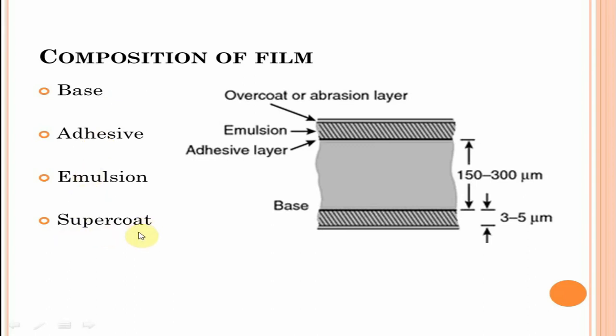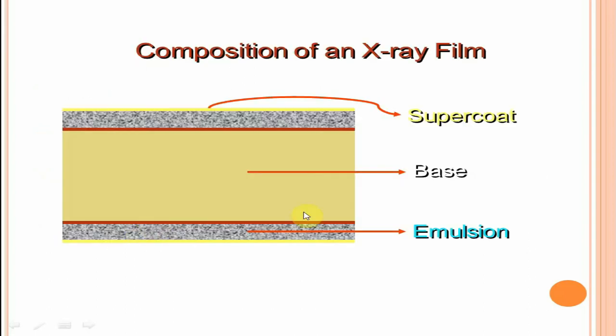This is a cross section of a film. On either side of the base, an adhesive is applied that helps attach the emulsion to the base. This is a double emulsion film with emulsion present on both sides. Emulsion is the main component of the film. On top of the emulsion, a supercoat protects the film from mechanical damage.